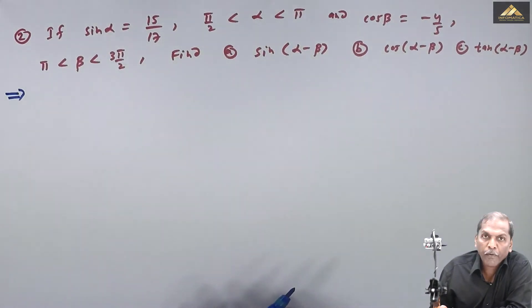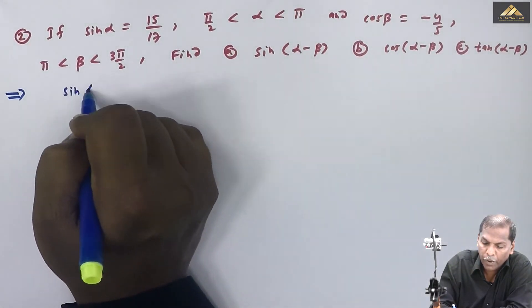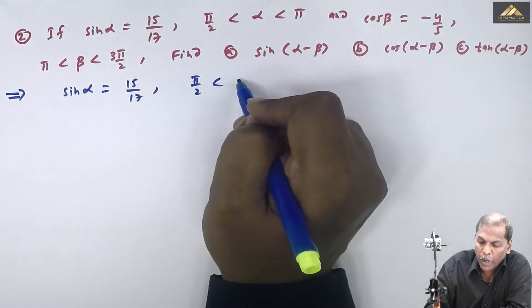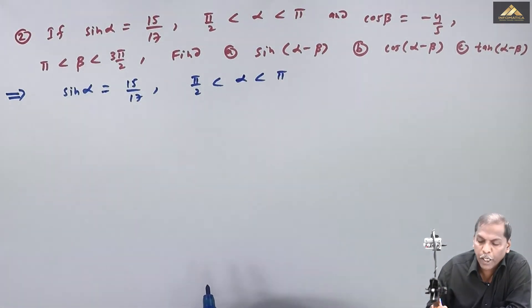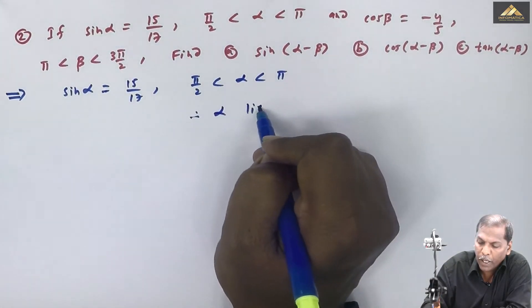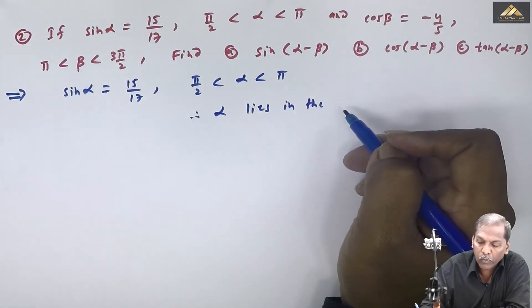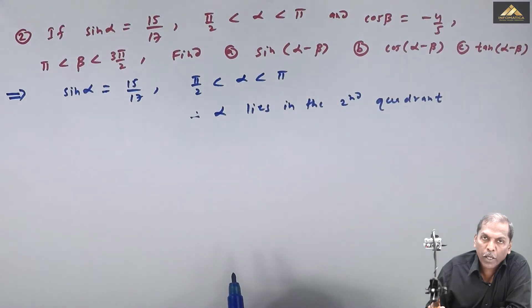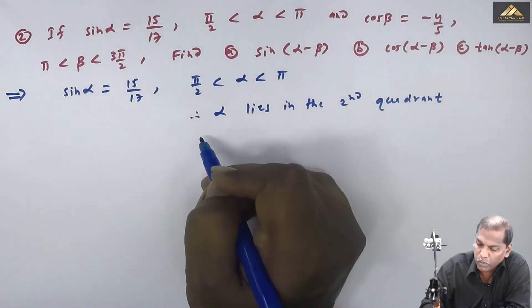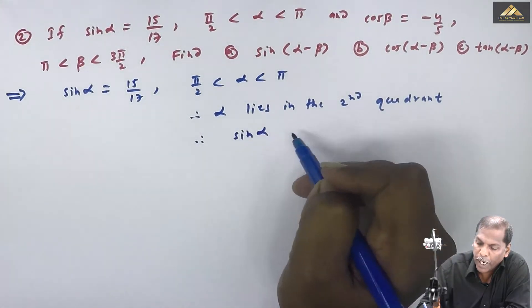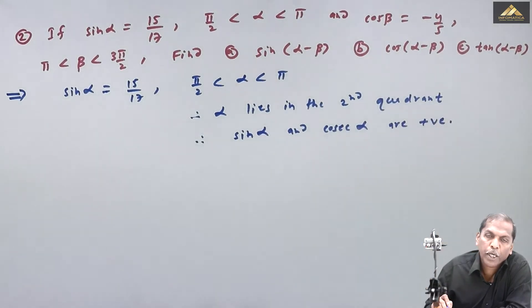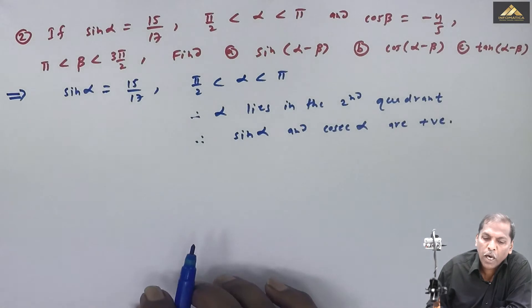We start with sin α. Given sin α = 15/17 and π/2 < α < π, it means α lies in the second quadrant. For the second quadrant, only sin θ and cosec θ are positive — this is the 'silver' rule. So sin α and cosec α are positive, and all remaining trigonometric ratios are negative.